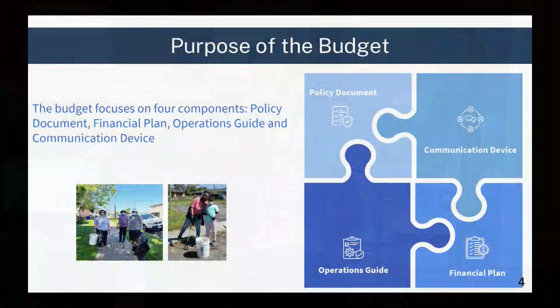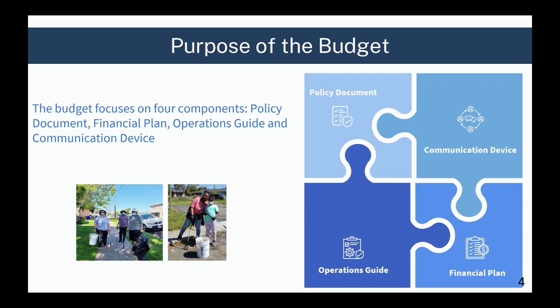I'm going to touch a little bit on the purpose of the budget. The budget primarily focuses on four key areas. It's a policy document — we include a snapshot of the city's financial policies within the document. It's also a communications device. It's an operations guide, utilized on a day-to-day basis as a tool for funds programmed for various projects and programs. And it's a financial plan, including long-term financial forecasting as well as the annual adopted budget for the year.